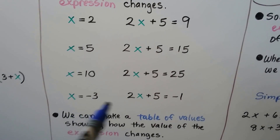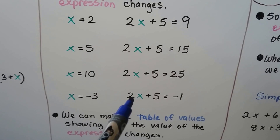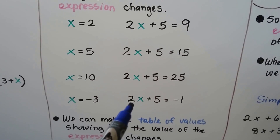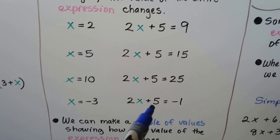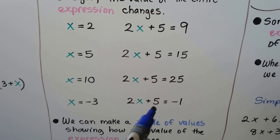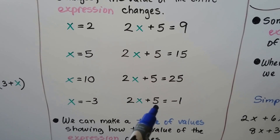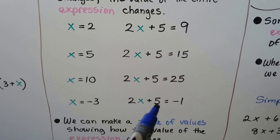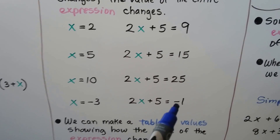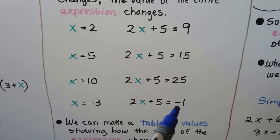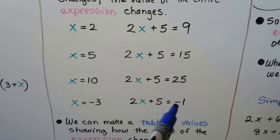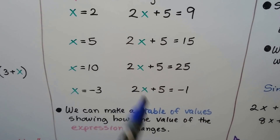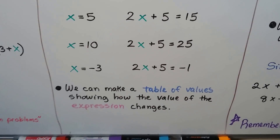If x is negative 3, we have 2 times negative 3, which gives us negative 6. Now we're adding negative 6 and positive 5 — we find the difference, which is 1 between 6 and 5, and it takes the sign of the value farthest from 0, the negative 6. So it's negative 1.